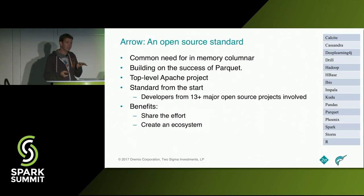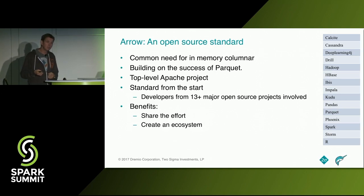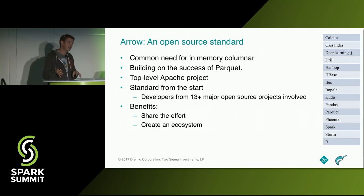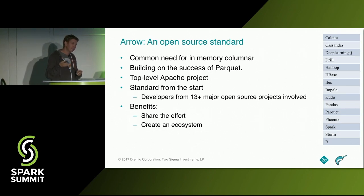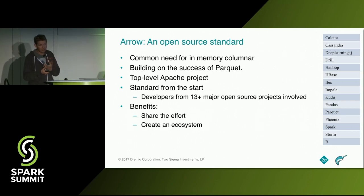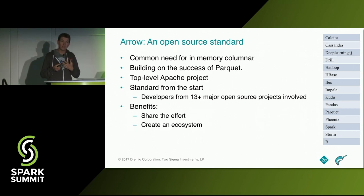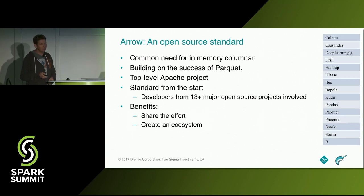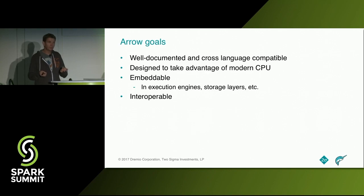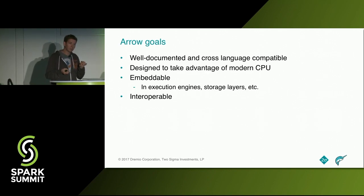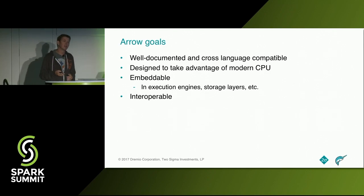The goal of the project is to have a well-documented, cross-language compatible in-memory representation, so you can use it from Java to C++ and seamlessly communicate from one process to another. It's designed to take advantage of modern CPUs — pipelining, cache locality, etc. — and it's embeddable and interoperable. In the case of Spark and Python, there's a lot of overhead making them communicate because one is a native process in Python and Spark runs on the JVM. Most of the time you find the lowest common denominator for communicating between the two, with a lot of overhead from just serializing and deserializing.